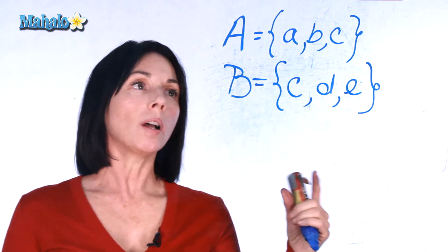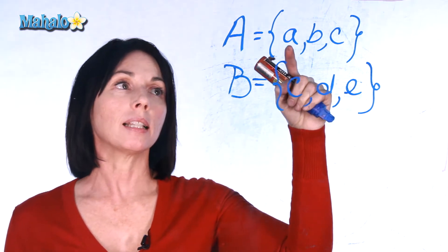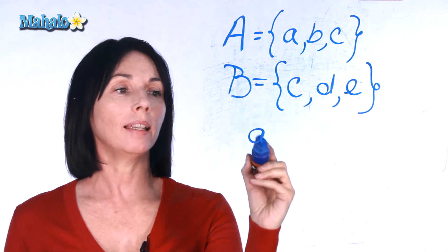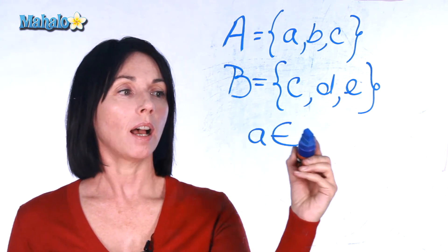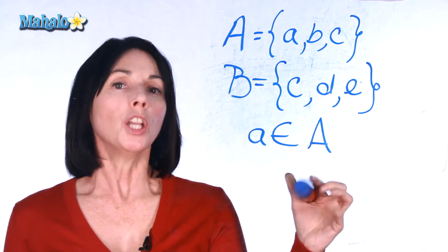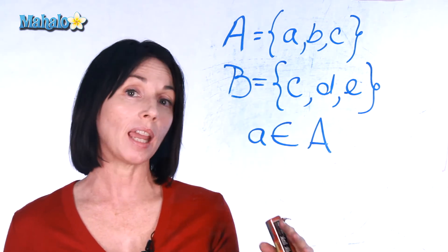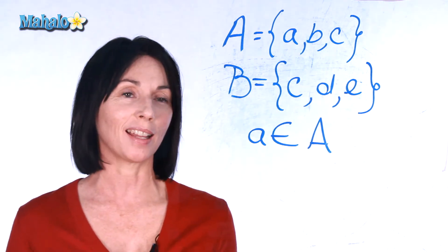Now if you wanted to say that little a existed in set A, this is what you would do. You would write little a is an element of set A. Usually the sets are indicated with capital letters, and if they have letters in the sets, those are indicated with lowercase letters.